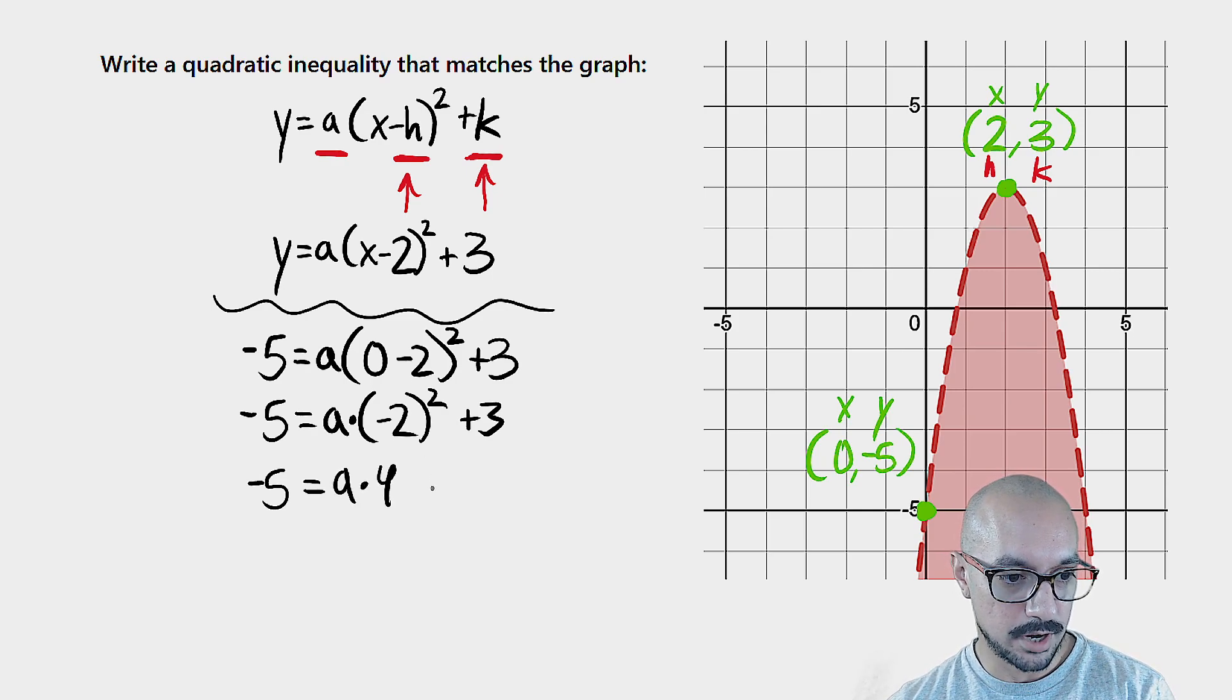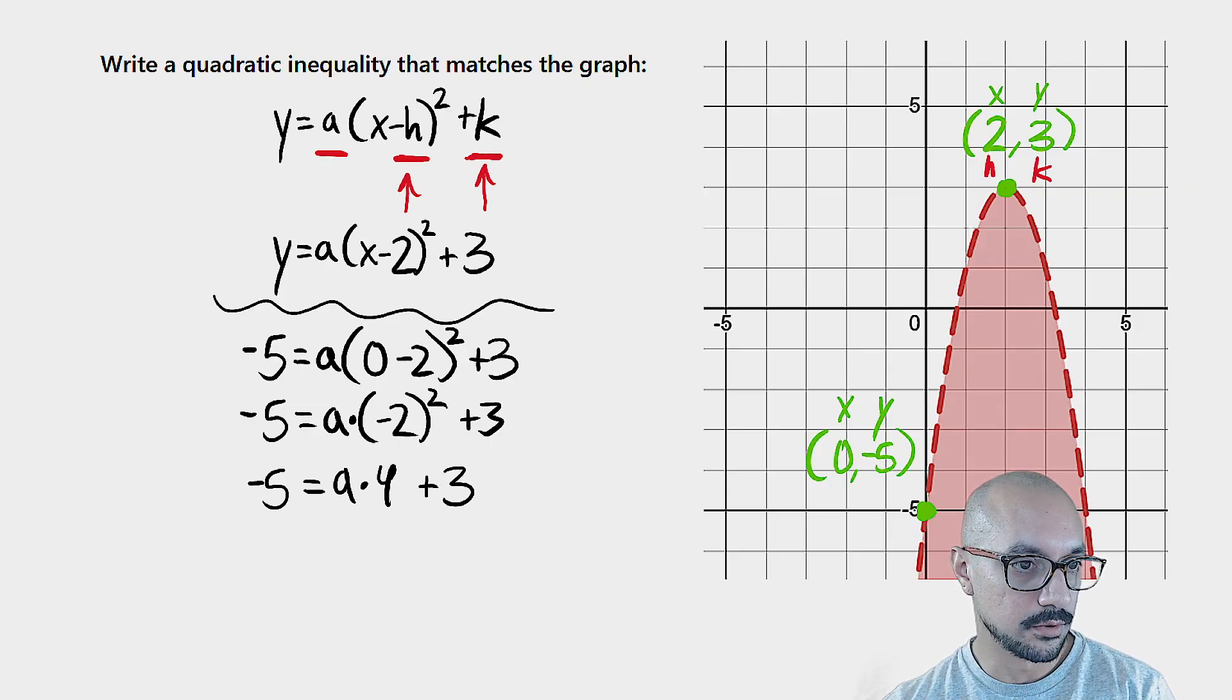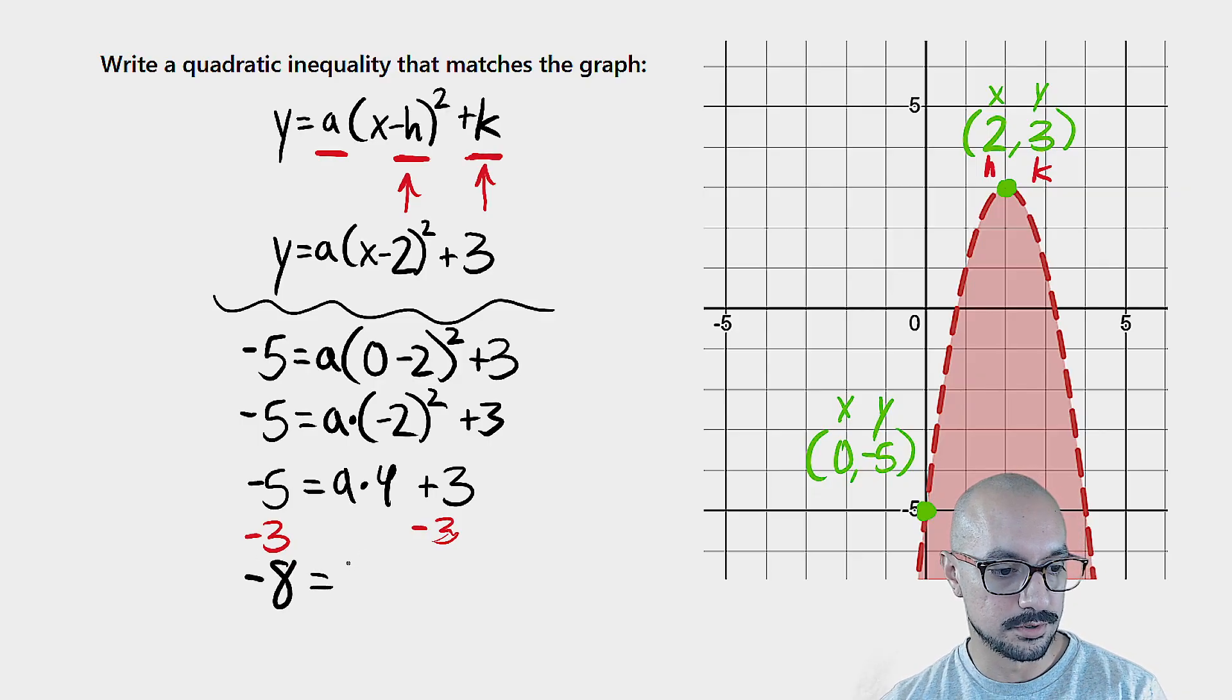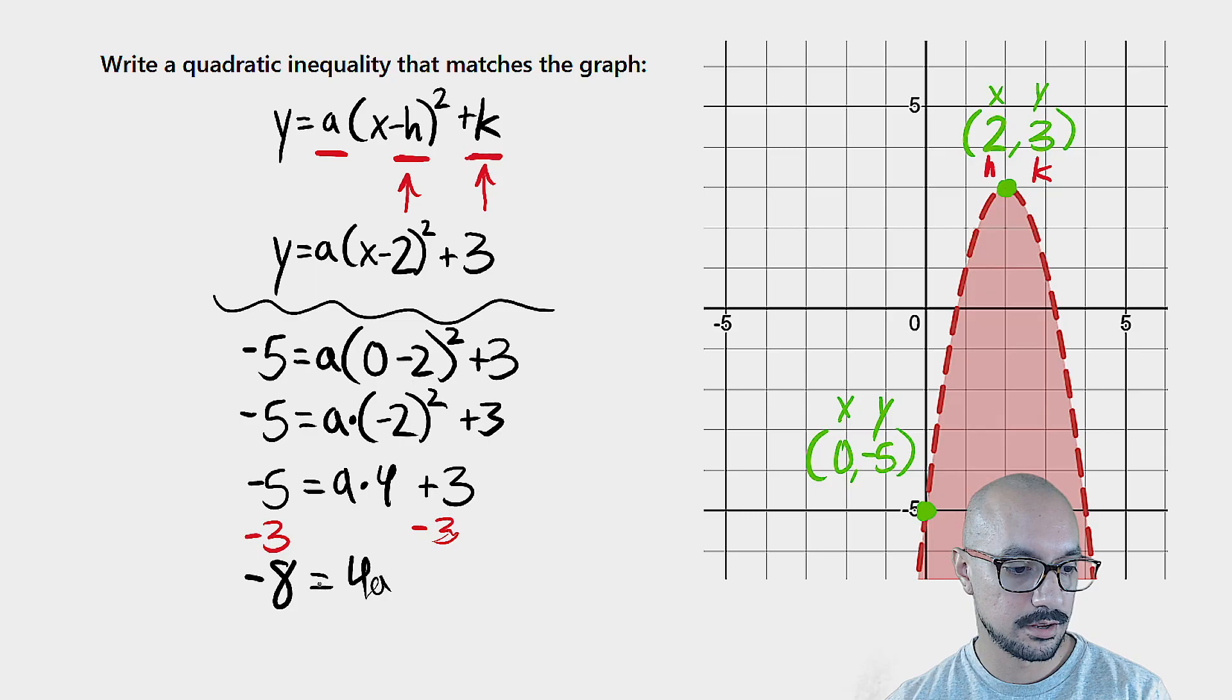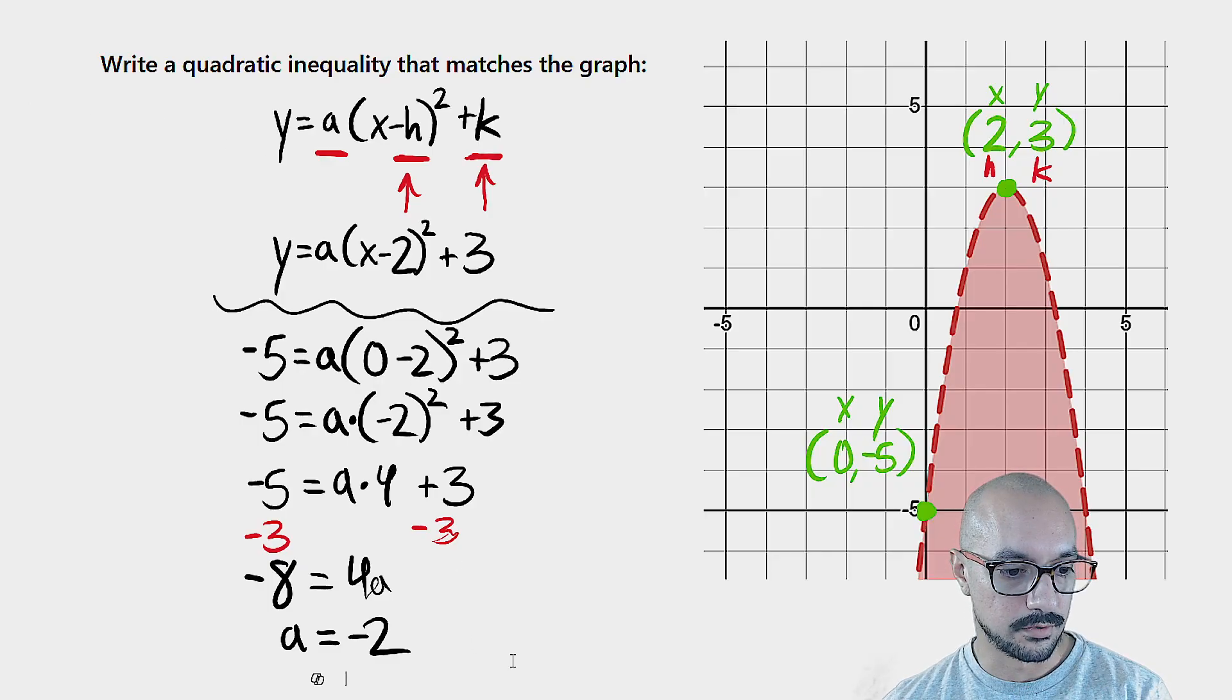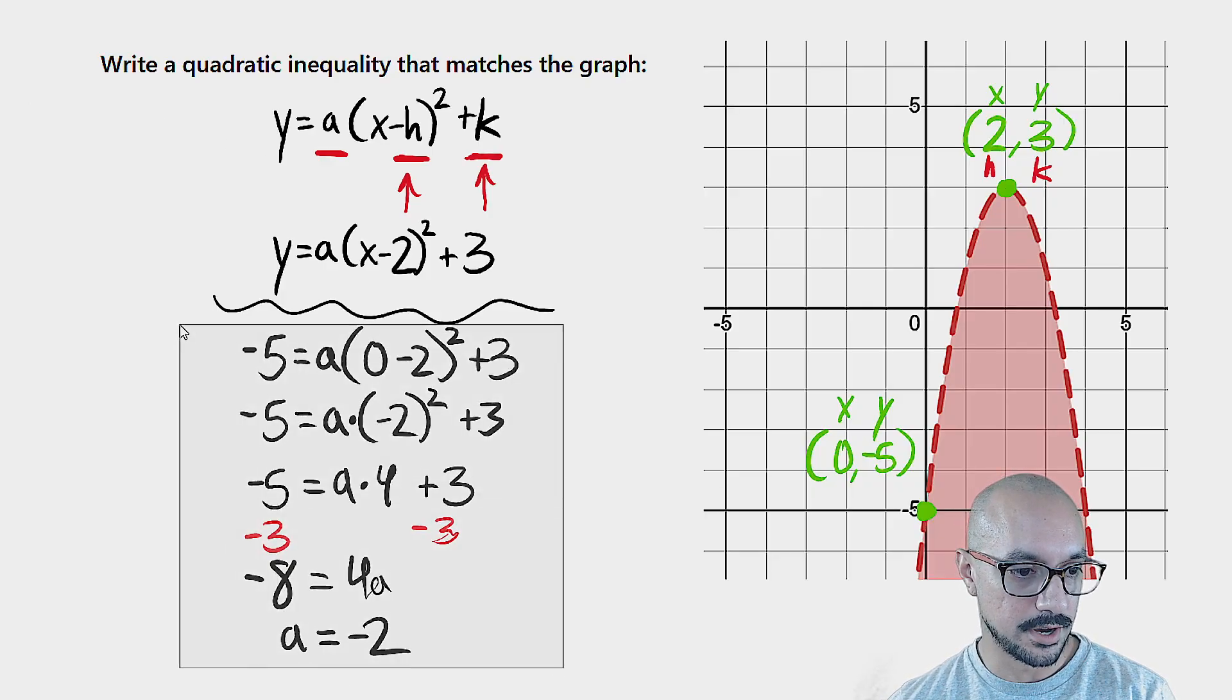Let me go ahead and just keep simplifying and bringing it down. a times four. I could also write that as four a. From here, we're going to go ahead and start using inverse operations. Negative eight is equal to four a. So a has to be negative two.